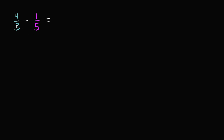The key is to rewrite each of these fractions so that they have the same denominator. How do we figure out what that same denominator is? It's going to be a common multiple of 3 and 5 — and ideally the least common multiple of 3 and 5.